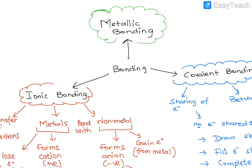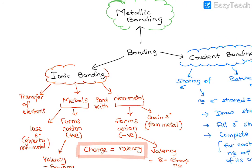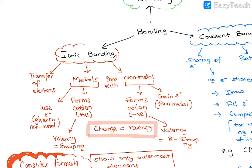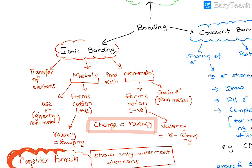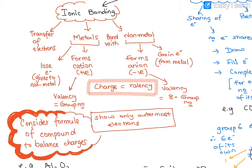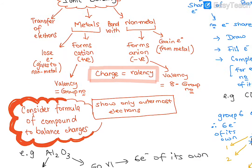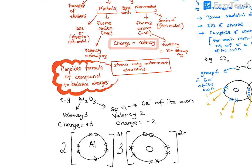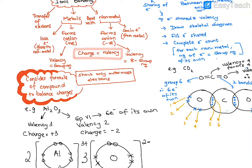Ionic bonding is the transfer of electrons when you have metals and non-metals. Metals will form cations, non-metals will form anions. The metal loses electrons which are transferred to the non-metal, and the charge of the cation or anion will depend on the valency.